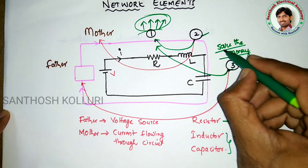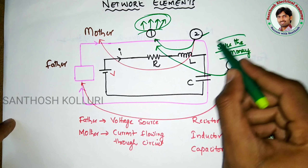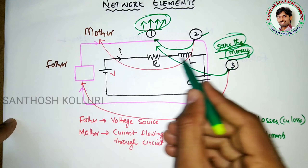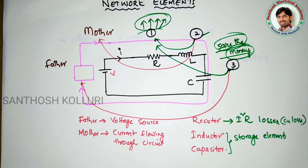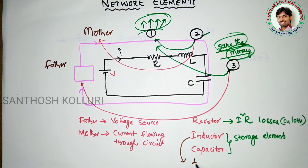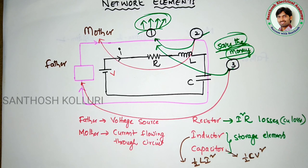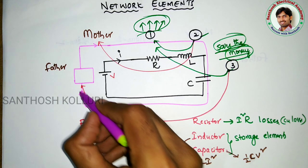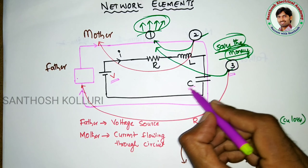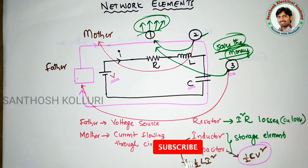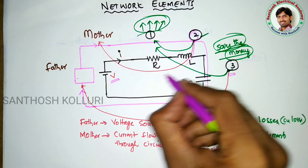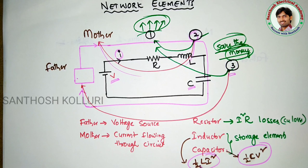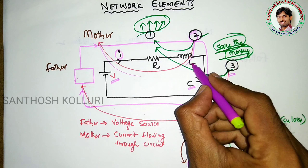These two elements save the money — here the money is the current flowing through those elements — and these are the storage elements. The inductor stores energy in the form of half LI-squared, and the capacitor stores energy in the form of half CV-squared. One kid closely associated with the father — the voltage source — stores energy as half CV-squared, and one kid closely associated with the mother — the current — stores energy as half LI-squared.